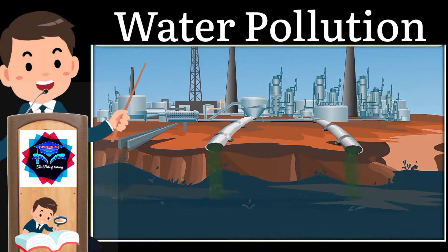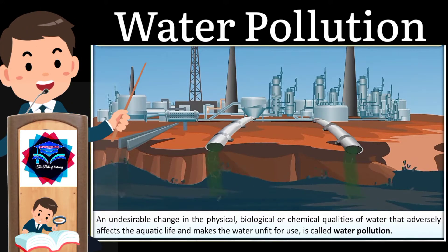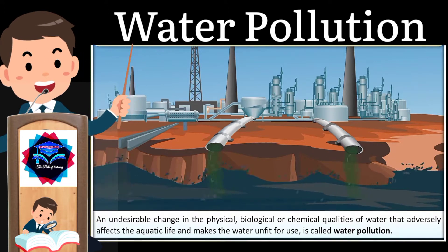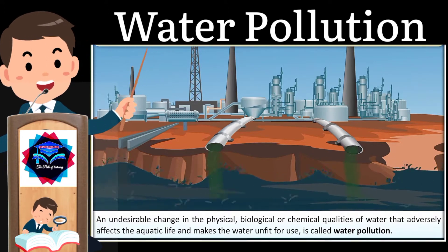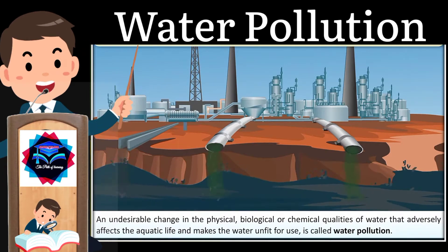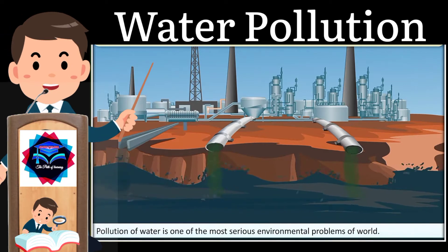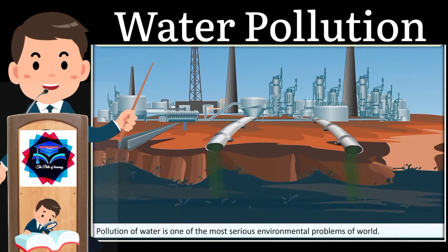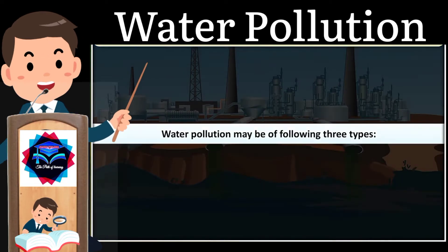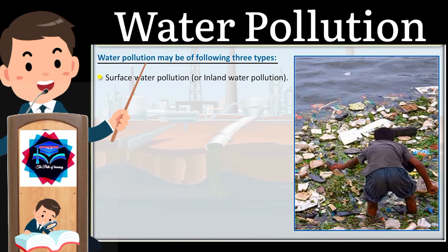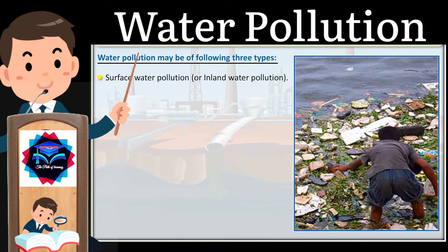Water pollution is an undesirable change in the physical, biological, or chemical qualities of water that adversely affects aquatic life and makes the water unfit for use. Pollution of water is one of the most serious environmental problems of the world. Water pollution may be of the following three types: one, surface water pollution or inland water pollution.